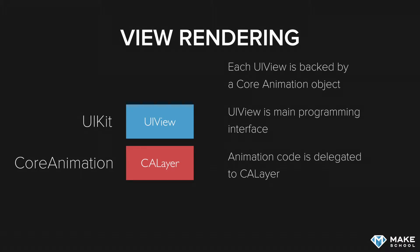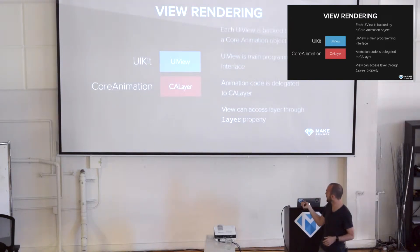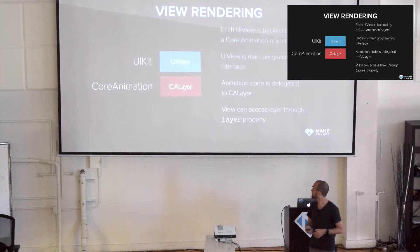A UIView is actually just a nice little wrapper on top of that Core Animation layer, and that Core Animation layer exposes much, much more properties that are not available through your UIView. You'll probably encounter that if you want to work with any kind of visual effects like rounded corners, shadows, and so on. You can access this Core Animation layer through the layer property of the view. So if you're curious to see what kind of additional properties you can modify, take a look at the layer property and the CALayer class.